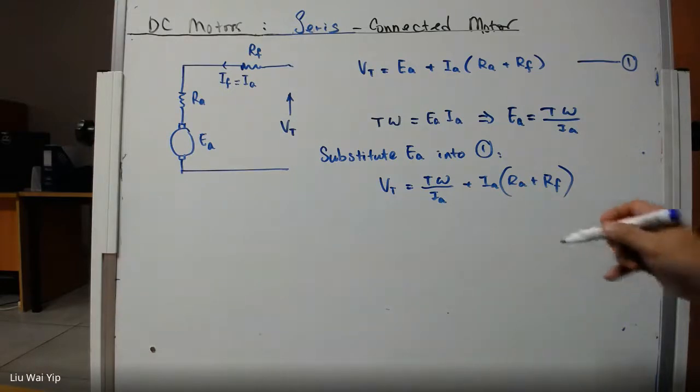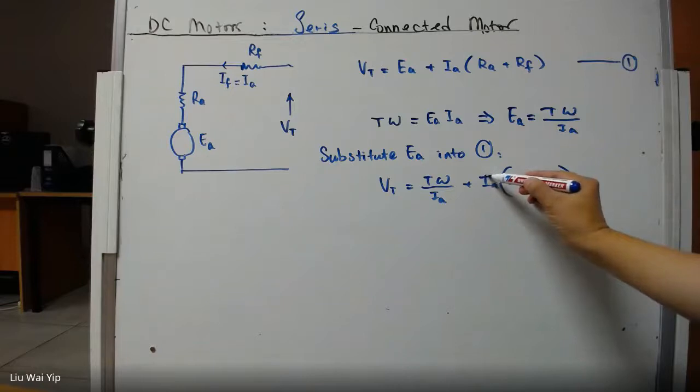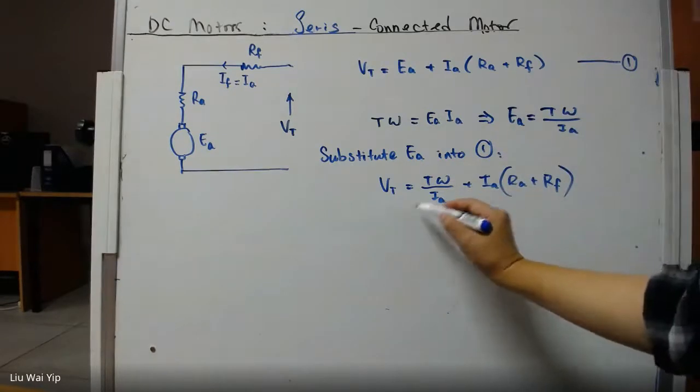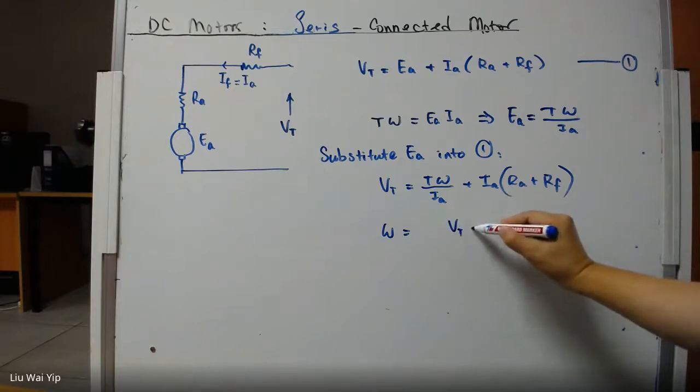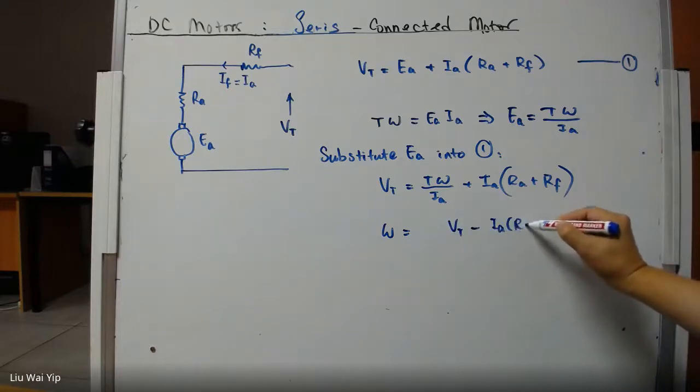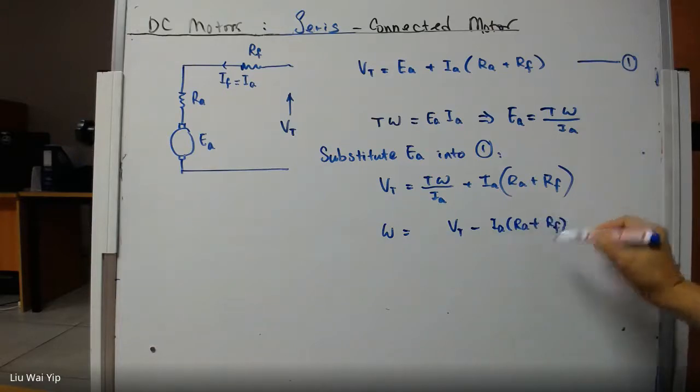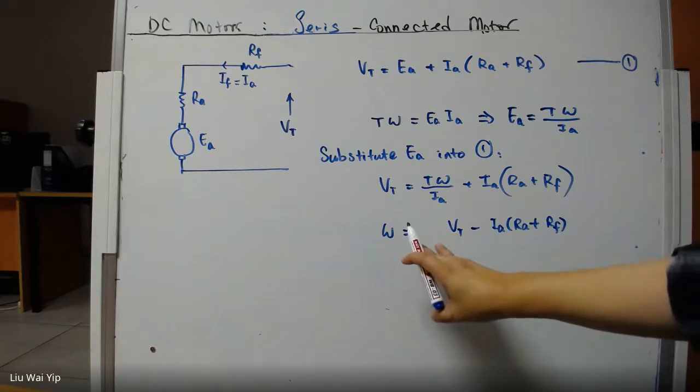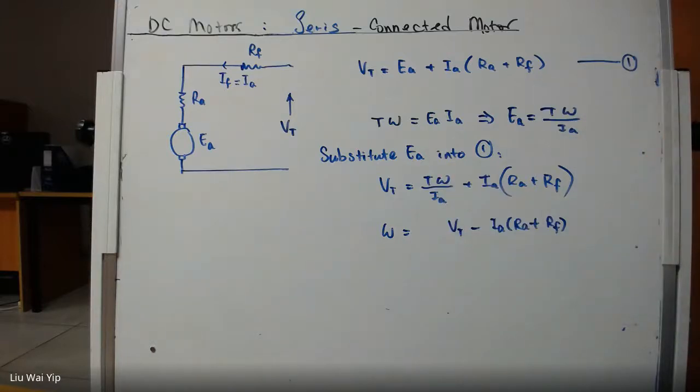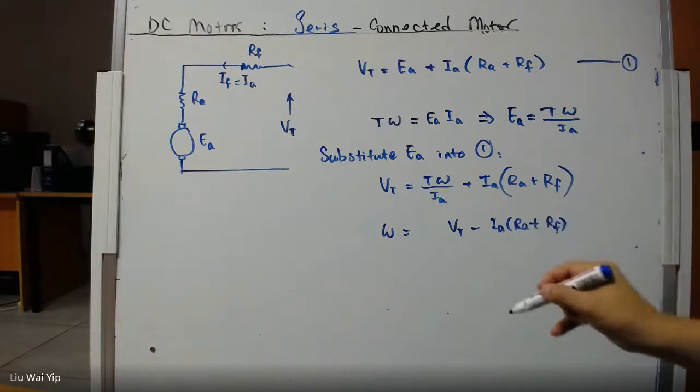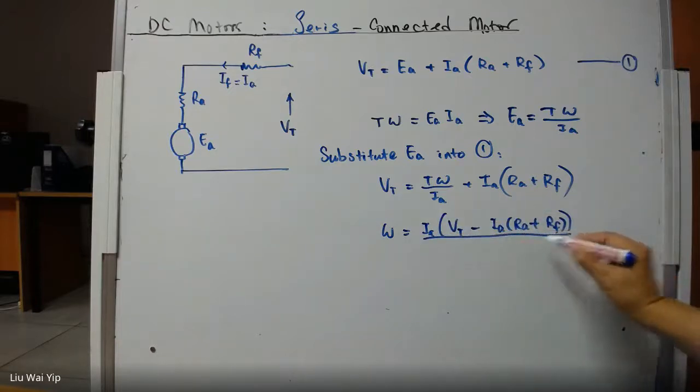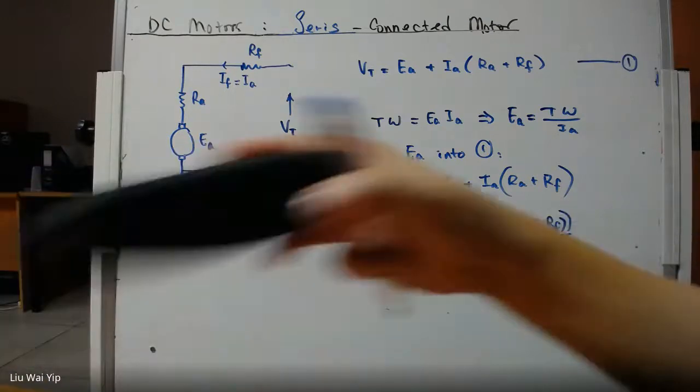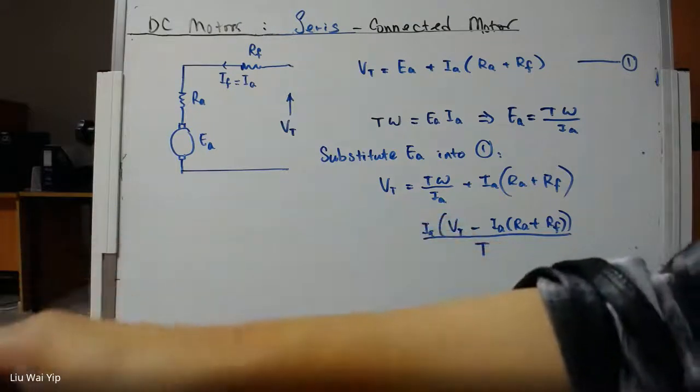Now I think it's pretty clear. IA will depend on the speed, but that doesn't matter. We can quickly fix the problem. Omega is going to be VT minus IA times RA plus RF divided by T. So this is the main relation for the series connected motor.